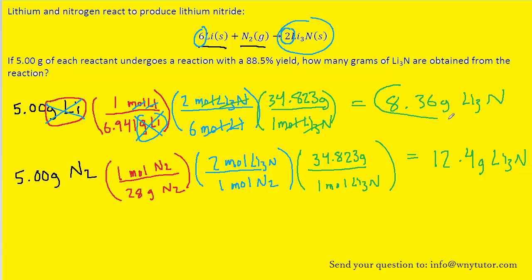When we finish that calculation, we can see that it is the 5 grams of lithium that leads to the fewer number of grams of product. Whenever you have two or more reactants and you calculate the grams of product, you want to select the fewest number of grams of product. In the language of limiting reagents, the lithium is the limiting reagent as opposed to the nitrogen.